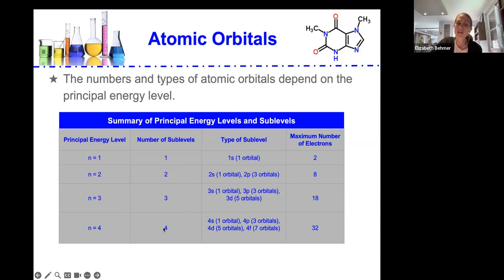And in the fourth energy level, we have four sub-levels, 4s, 4p, 4d, and 4f. So you can see the number of orbitals in each of those sub-levels, and there's two electrons in each of those orbitals for a total of 32 electrons in that fourth principal energy sub-level.